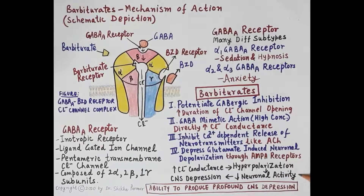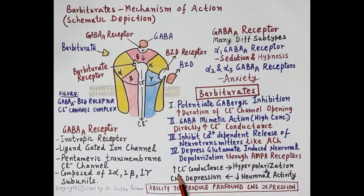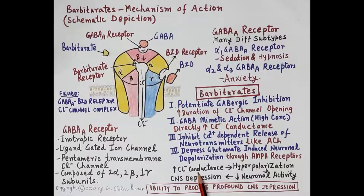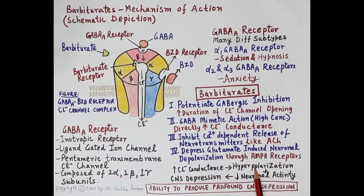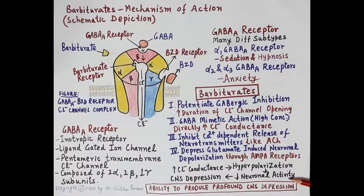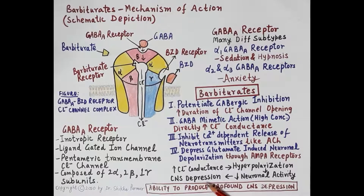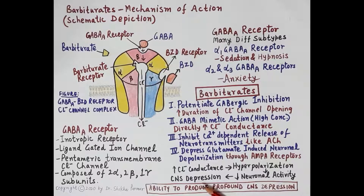As depicted in the flow diagram: GABA binding to GABA-A receptors causes opening of the chloride channel and increased chloride conductance. The membrane potential becomes negative — hyperpolarization — generating inhibitory post-synaptic potential. This causes inhibition of action potential, inhibition of depolarization, and inhibition of neuronal activity, resulting in CNS depression, which is responsible for sedative as well as hypnotic effect.